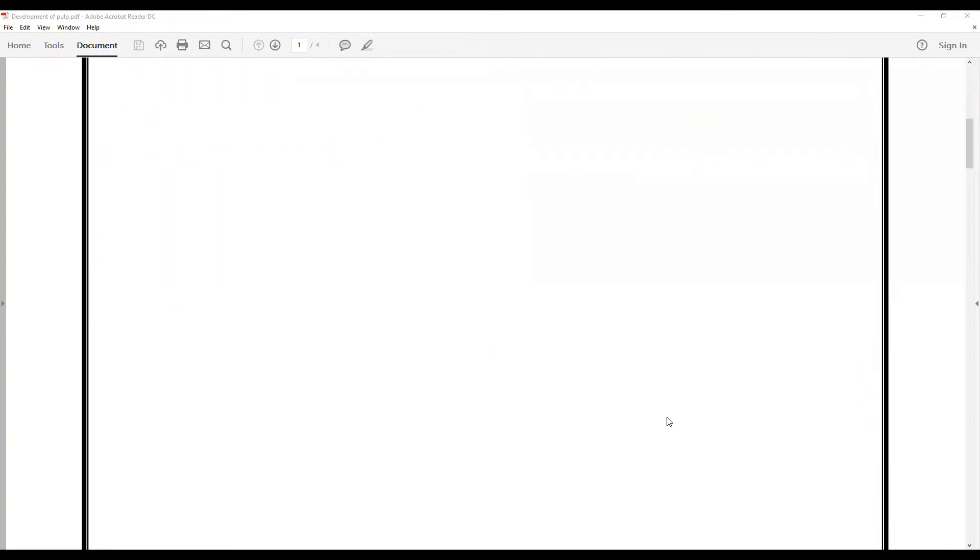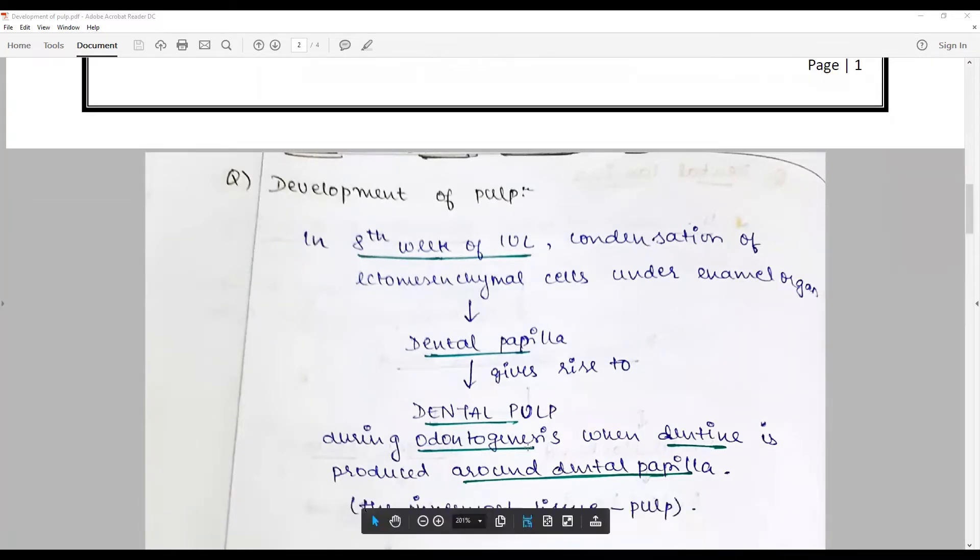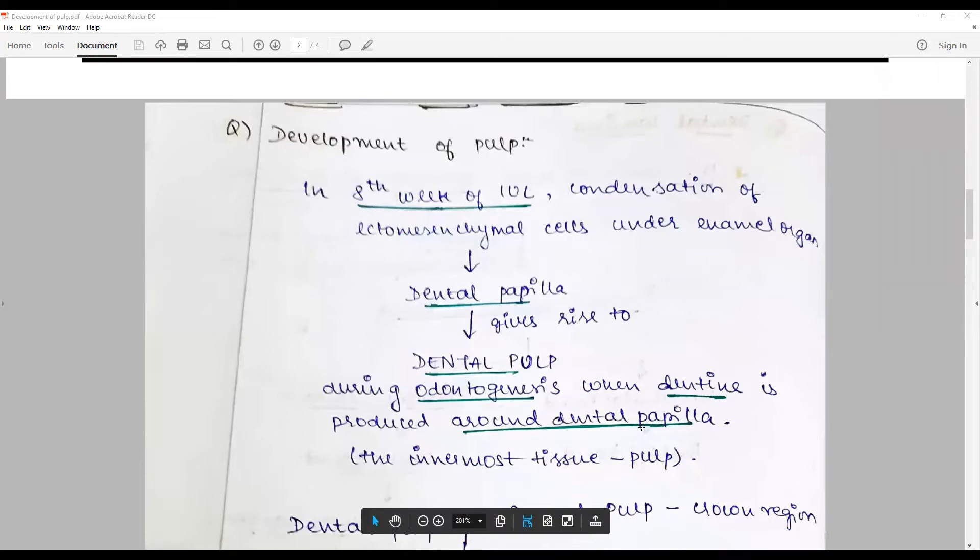In the eighth week of intrauterine life, the condensation of ectomesenchymal cells under the enamel organ turns itself into the dental papilla. This dental papilla is the core that gives rise to the dental pulp during odontogenesis when the dentin is produced around it.